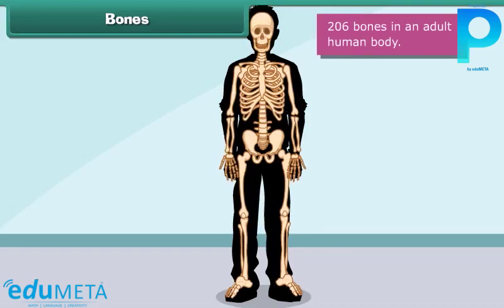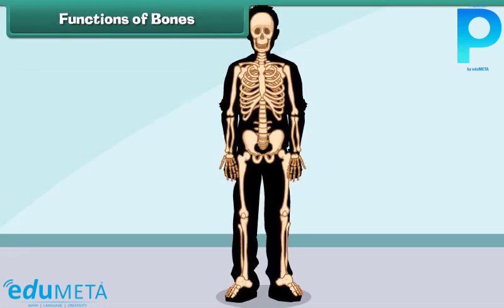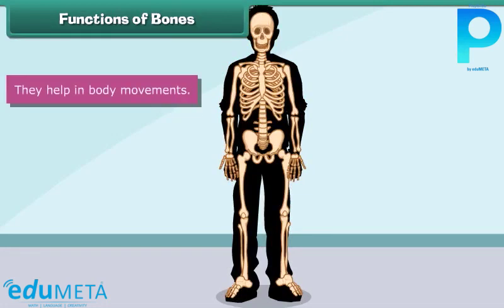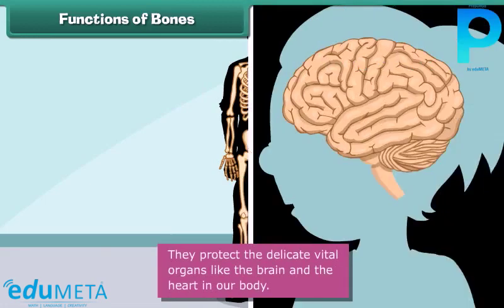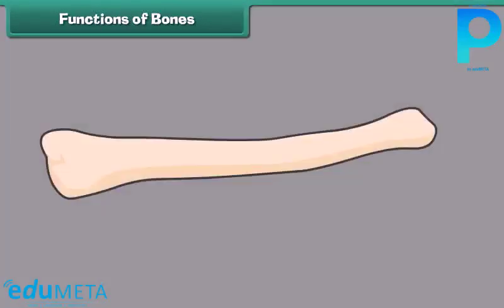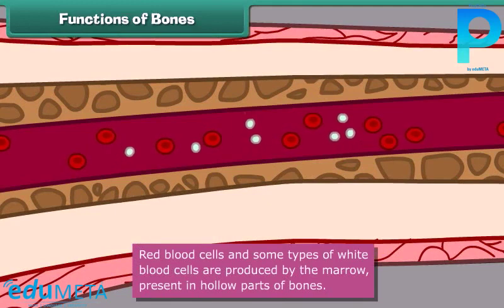What functions do bones perform? Bones give shape and support to the body. They help in body movements. They protect the delicate vital organs like the brain and the heart. Red blood cells and some types of white blood cells are produced by the marrow present in the hollow parts of the bones.